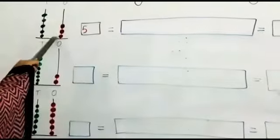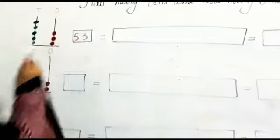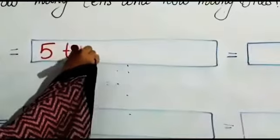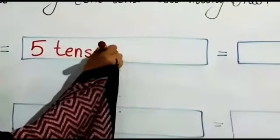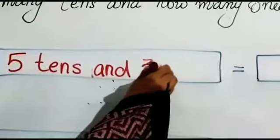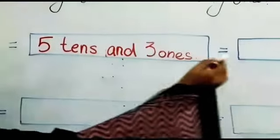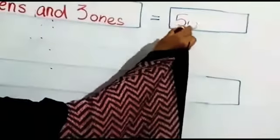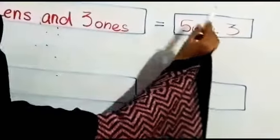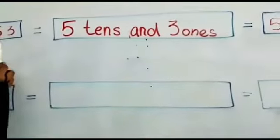Beads in 1s, 1, 2, 3. So it becomes 53. So we also write 5 tens and 3 ones. 5 tens is 50 plus 3 ones is 3. 50 plus 3 becomes 53.